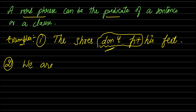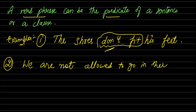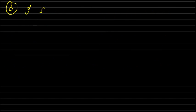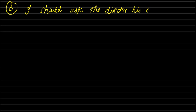Second example: 'We are not allowed to go in there.' This verb phrase follows the subject of the sentence. The subject is 'we', and the verb phrase functions as the predicate, expressing the action of the sentence.